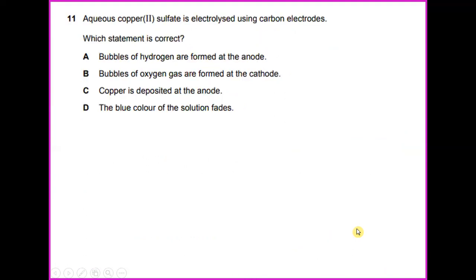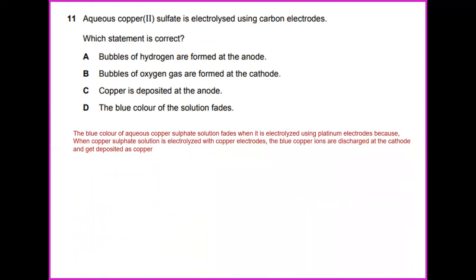Aqueous copper sulfate is electrolyzed using carbon electrodes. Which statement is correct? The blue color of copper sulfate solution fades when it is electrolyzed using platinum electrodes. Because when copper sulfate solution is electrolyzed with copper electrodes, the blue copper ions are discharged at the cathode and get deposited as copper. So the answer for this would be the blue color of the solution fades.